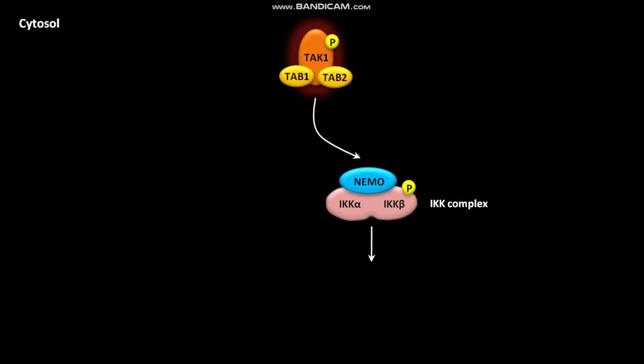A complex is formed in which the inactive NF-κB is bound to IκB. The IκB retains NF-κB in its inactive form. Activated IKK phosphorylates IκB.